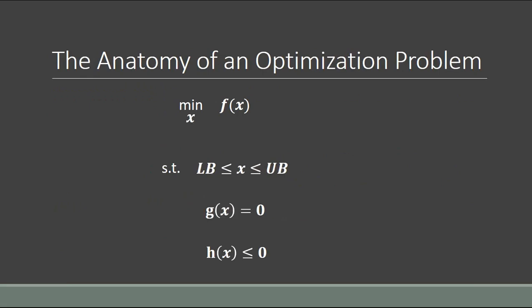An optimization problem has an objective function — the cost you're trying to minimize, the efficiency you're trying to maximize, or the profit you're trying to maximize. You put all terms on the same basis; for example, if measuring profit in dollars per minute, you'd express revenue, labor, and material costs all in dollars per minute, with each term adding or subtracting to give the total profit or cost. The objective function, shown by f, is a scalar value.